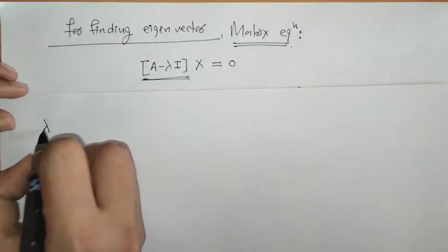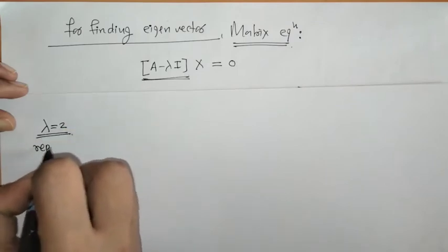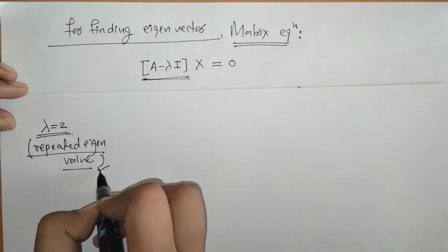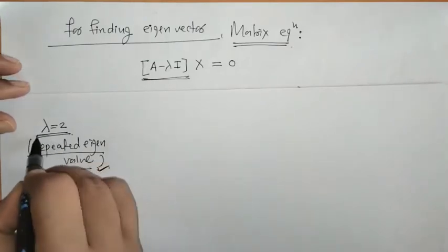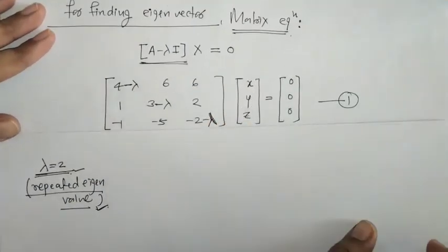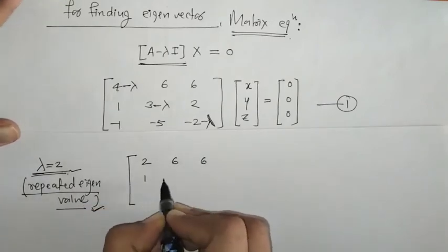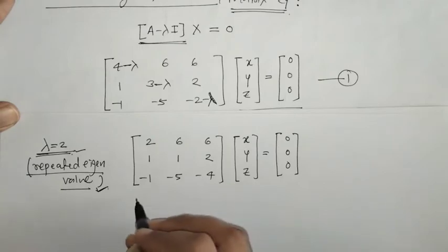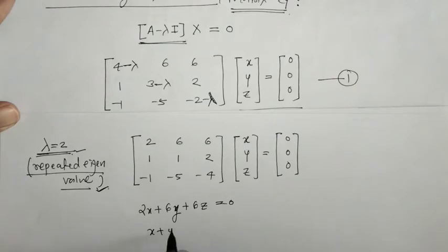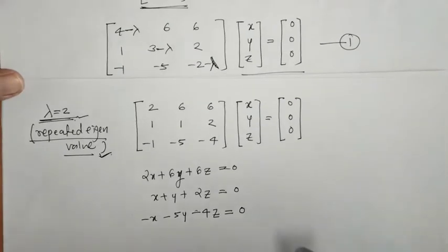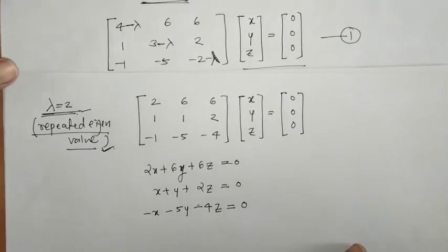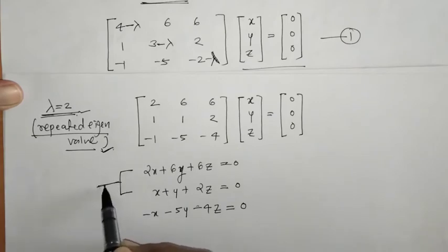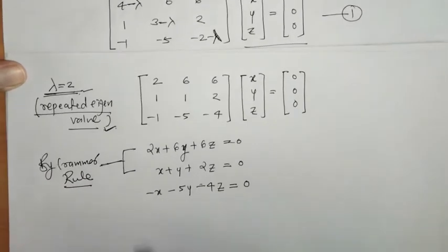Next, we find the eigenvector for λ = 2. This is a repeated eigenvalue, so we need to find two independent eigenvectors for this repeated eigenvalue. We put λ = 2 in the matrix equation and simplify to get a system of equations. We apply Cramer's rule to the first two equations to solve for x, y, z.